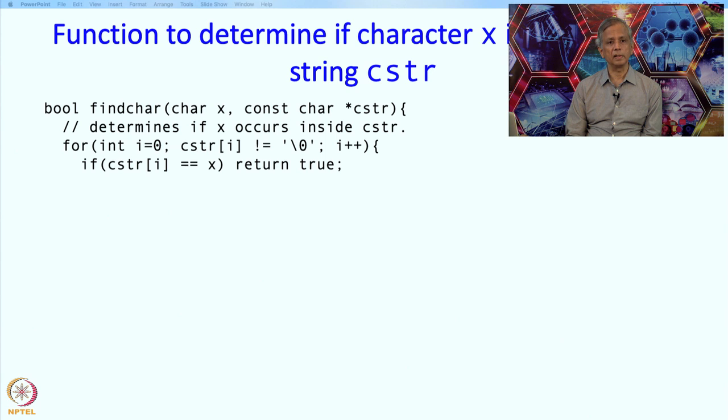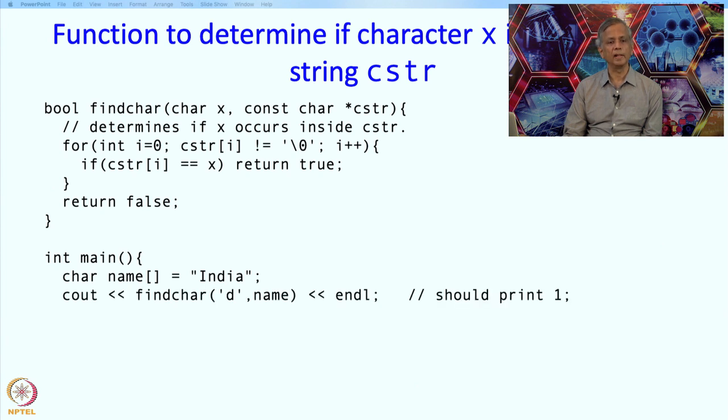Here if we encounter x, if at any index we encounter x then we return true. If we go through this entire loop and we do not encounter x, that is when our control will come to this point. So if control reaches this point then that means x does not appear in this string CSTR stored in name, and therefore this should appear in the string in the name.